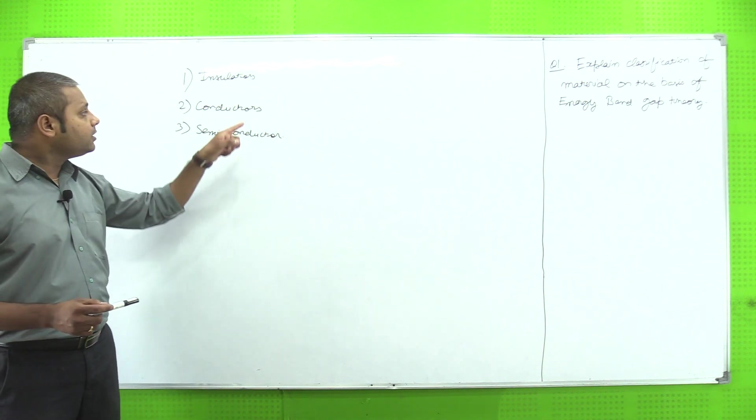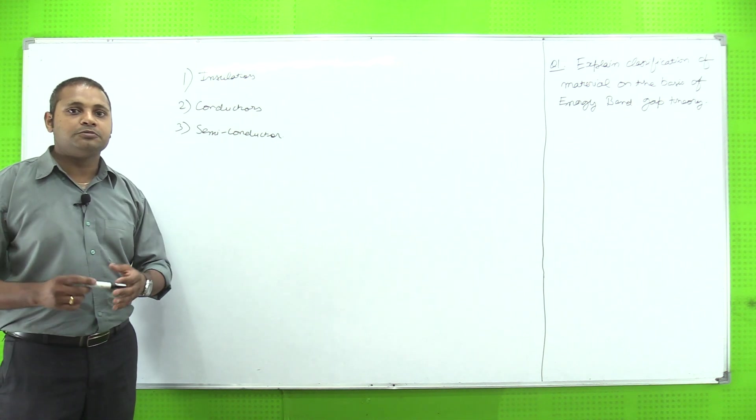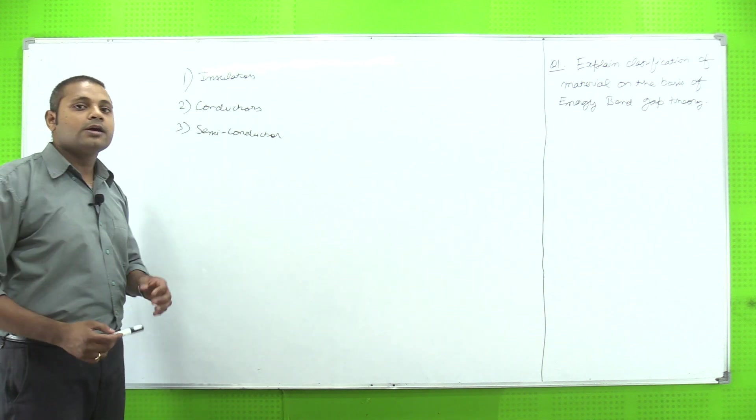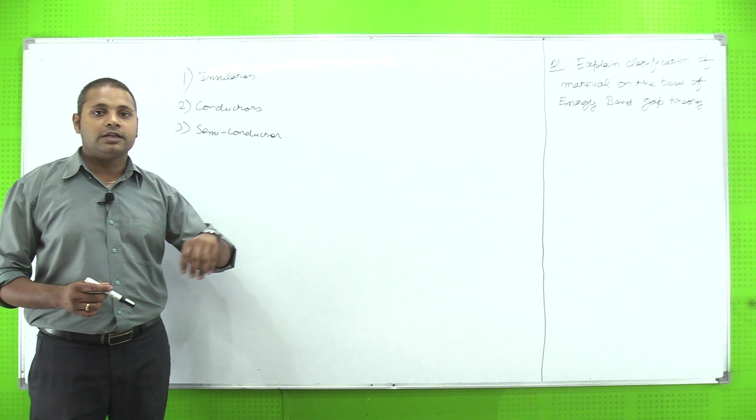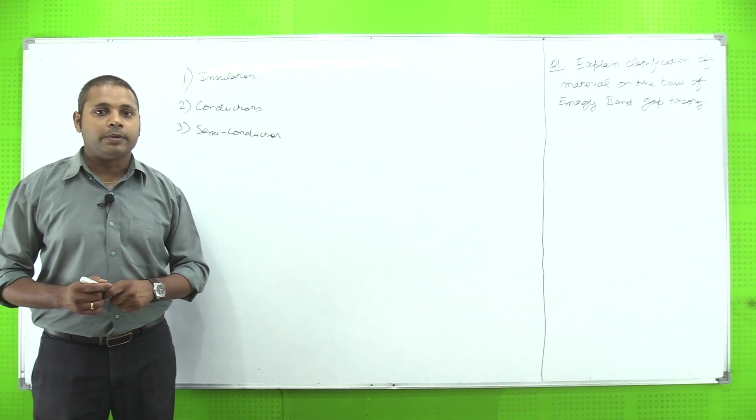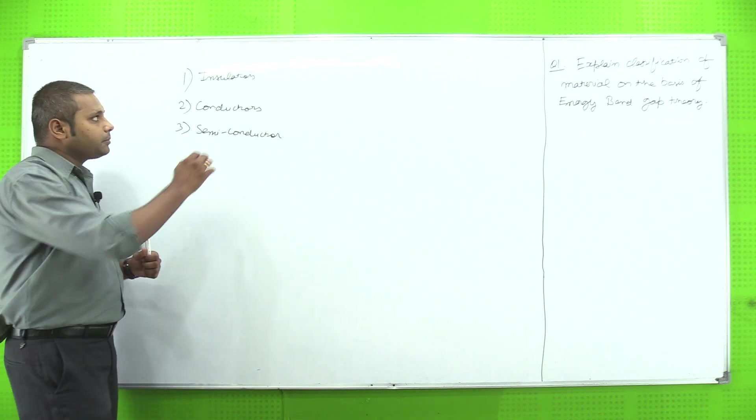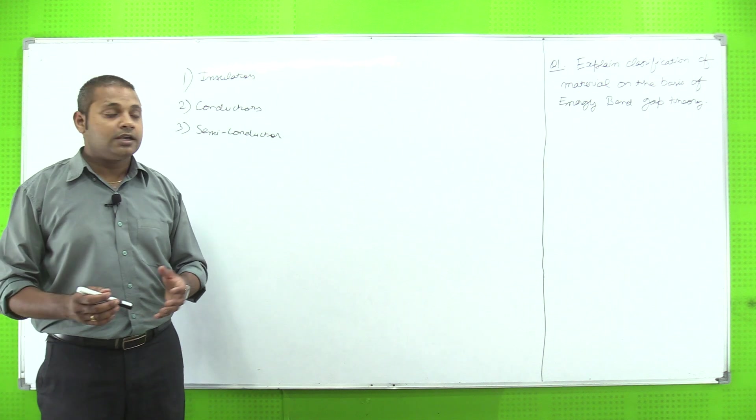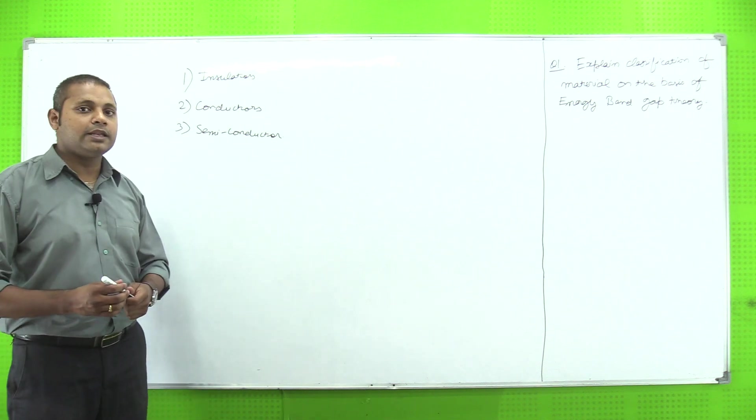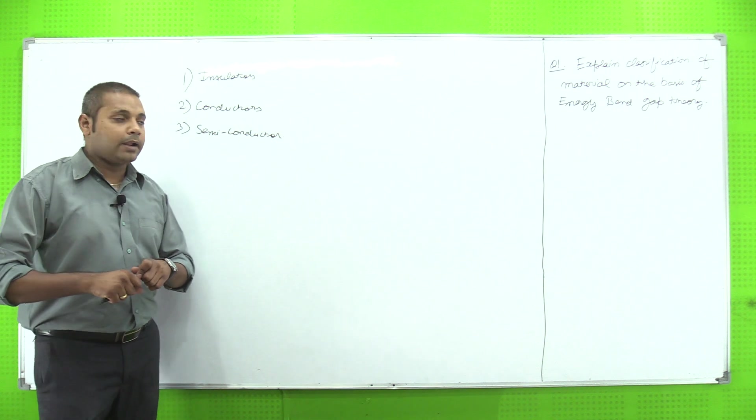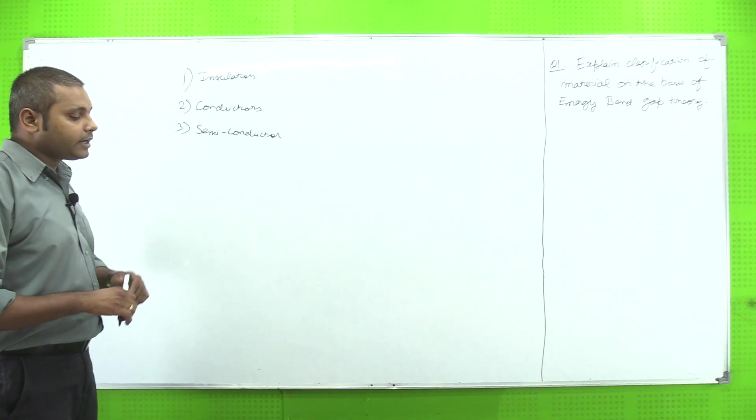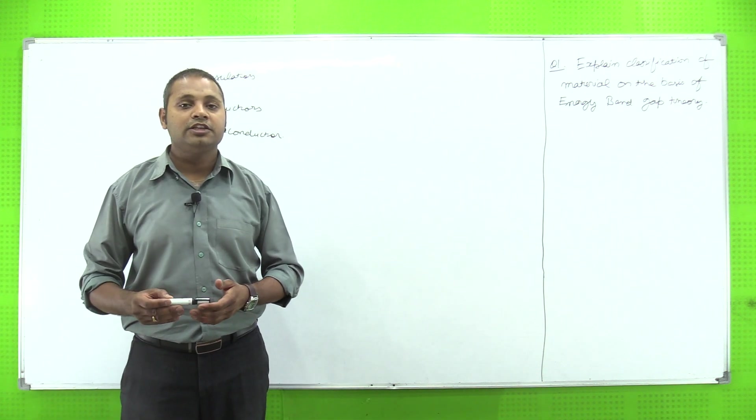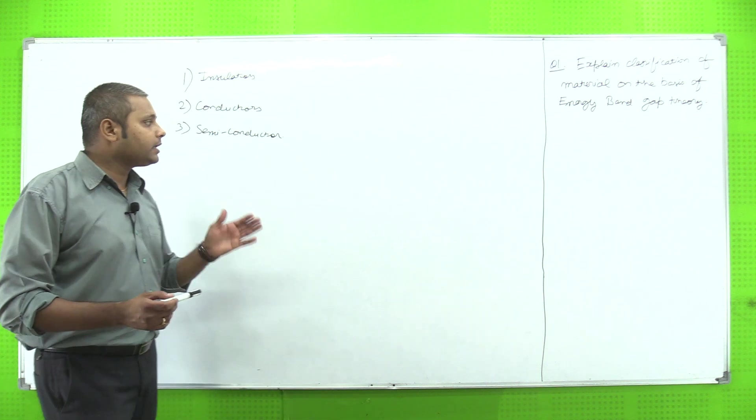Semiconductors woh material hai jo insulators aur conductors ki category ke center mein aate hai. Semiconductors woh material hain jin ki property conductor aur insulator ki bilkul center mein hai. Woh na toh proper insulator hain aur nahi woh proper conductors hain, lekin hum unko conductors kara sakte hain by the process of doping.